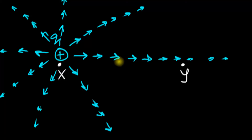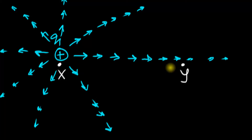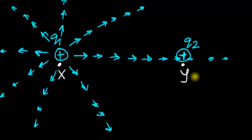So think about what has happened: keeping a charge at point X has influenced every single point in space, including point Y. Before this charge was placed, that patch of space had no intention of pushing or pulling anything. But now it has an intention — it's ready. The moment a positive charge Q2 appears over here, it's going to experience a force towards the right. That's how the force gets transmitted.